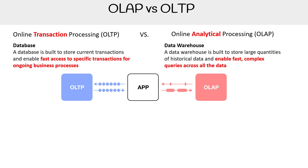When we visually look at OLTP, we have a bunch of small transactions that are evenly distributed — reads and writes look pretty similar. For a data warehouse, we have very few transactions and we have large payloads.